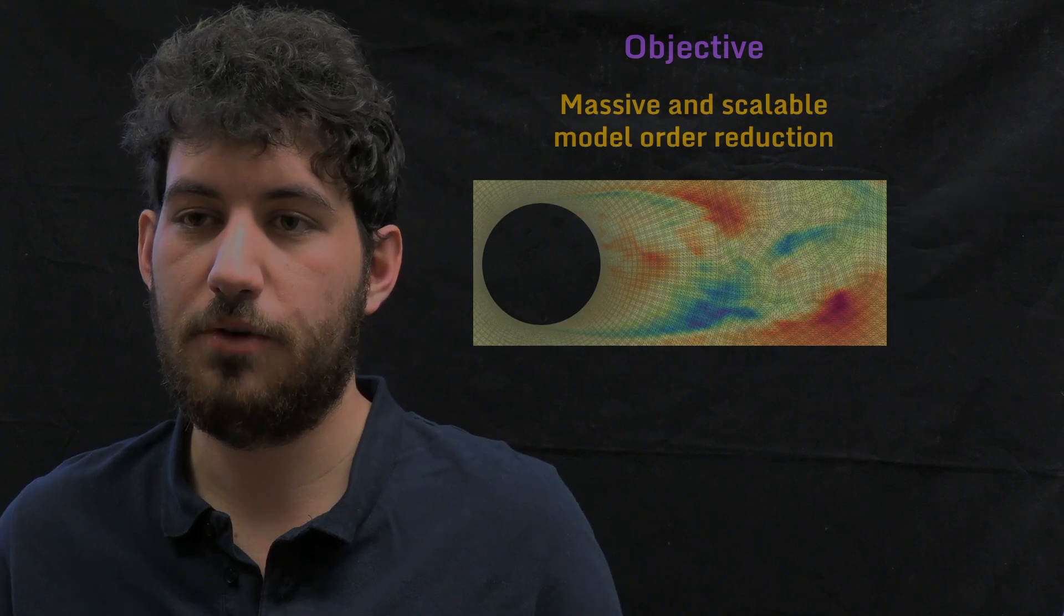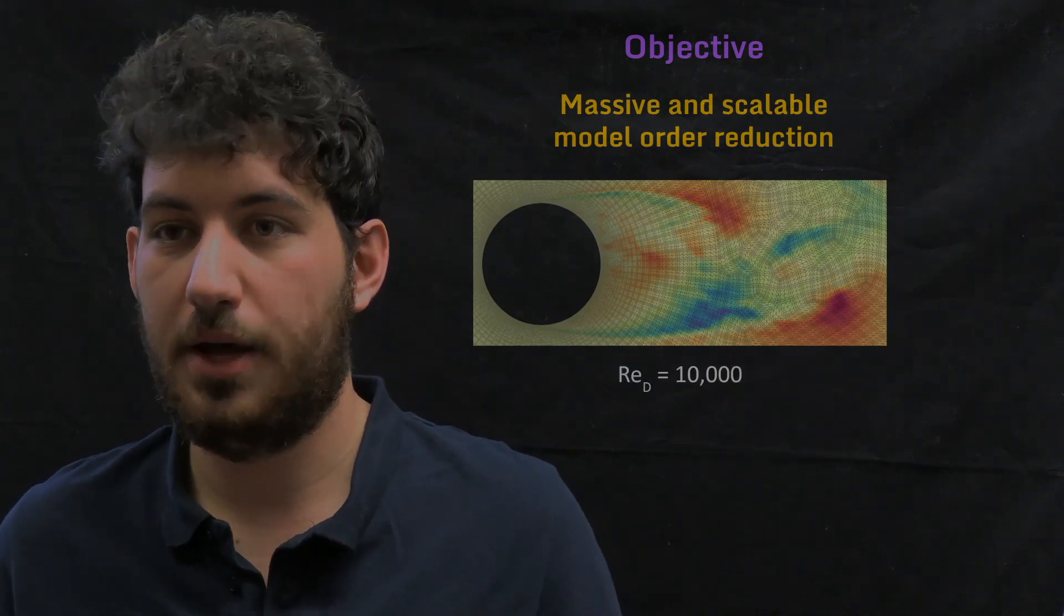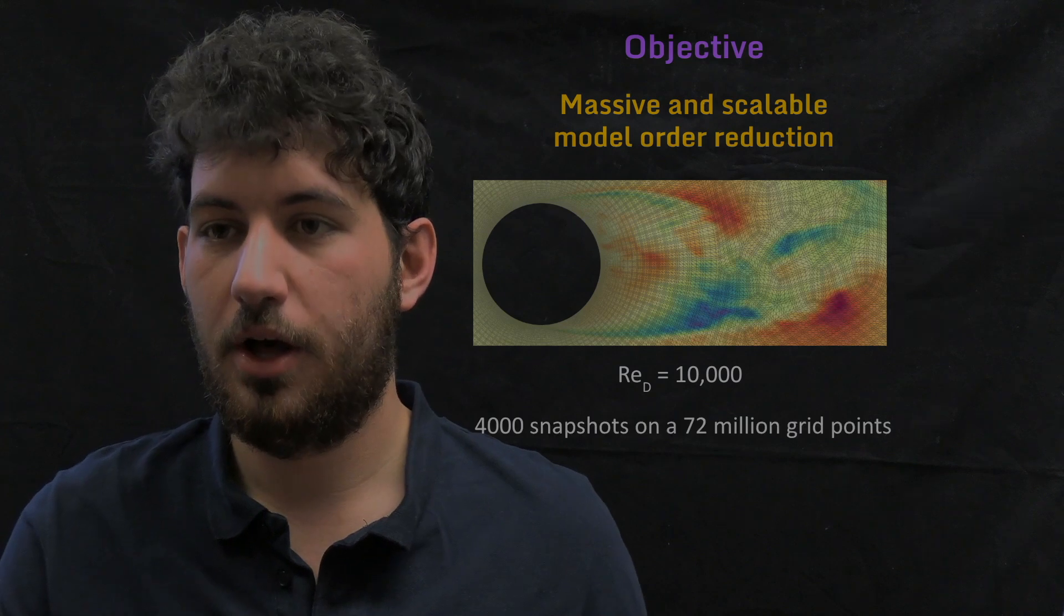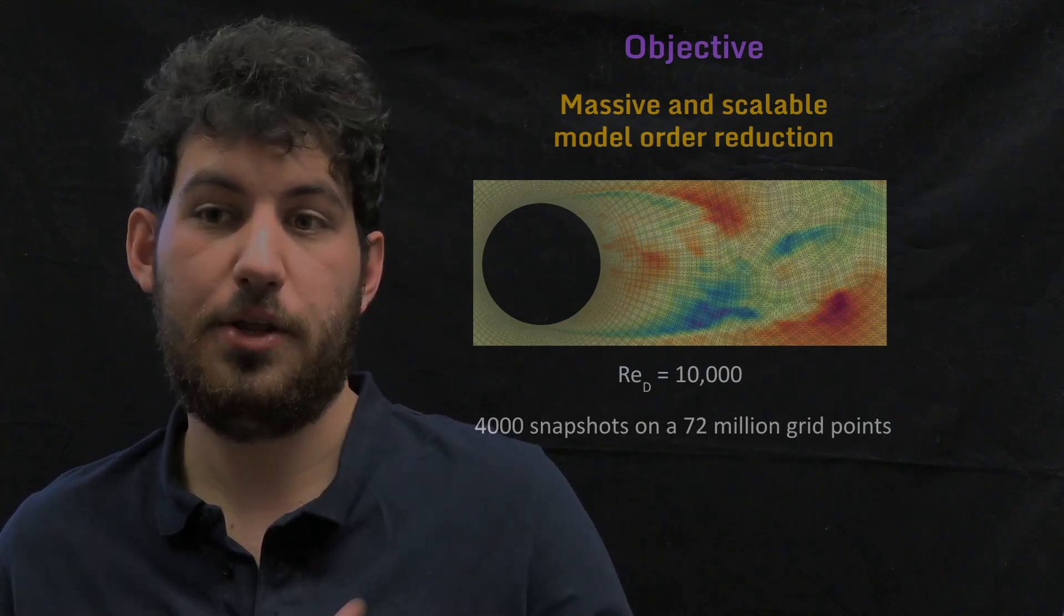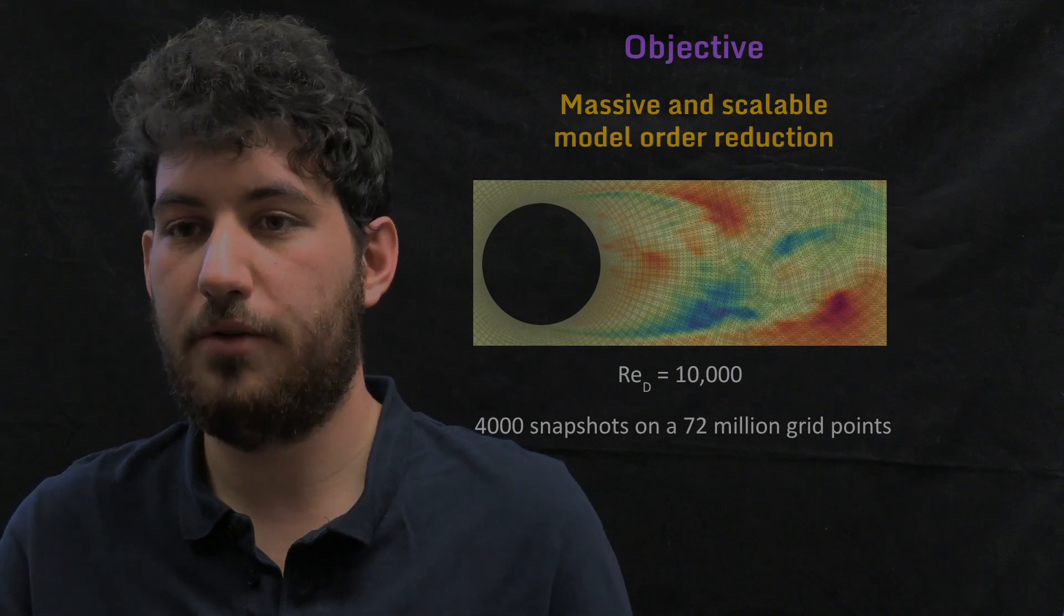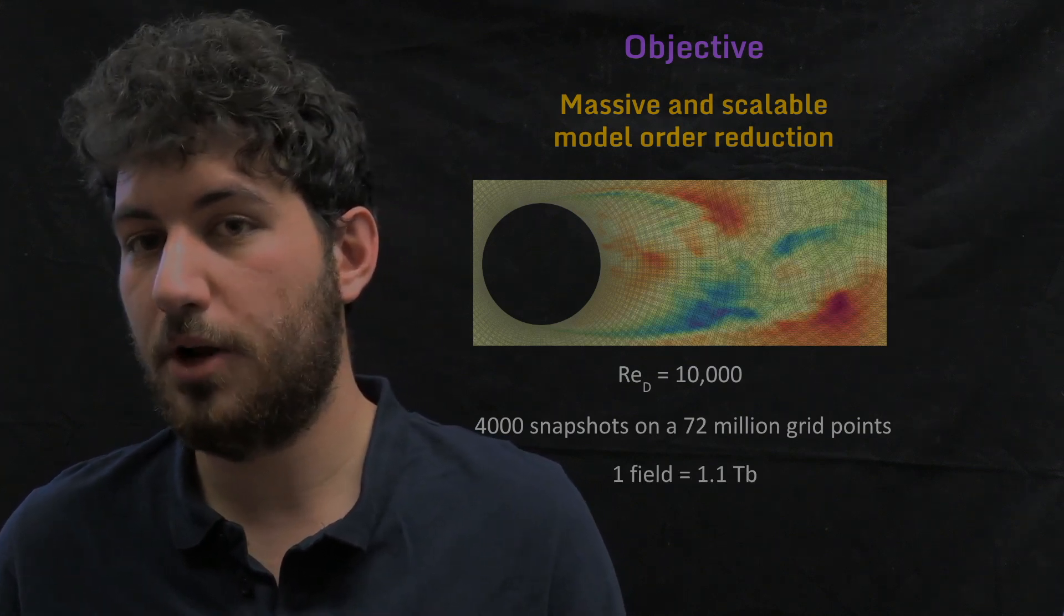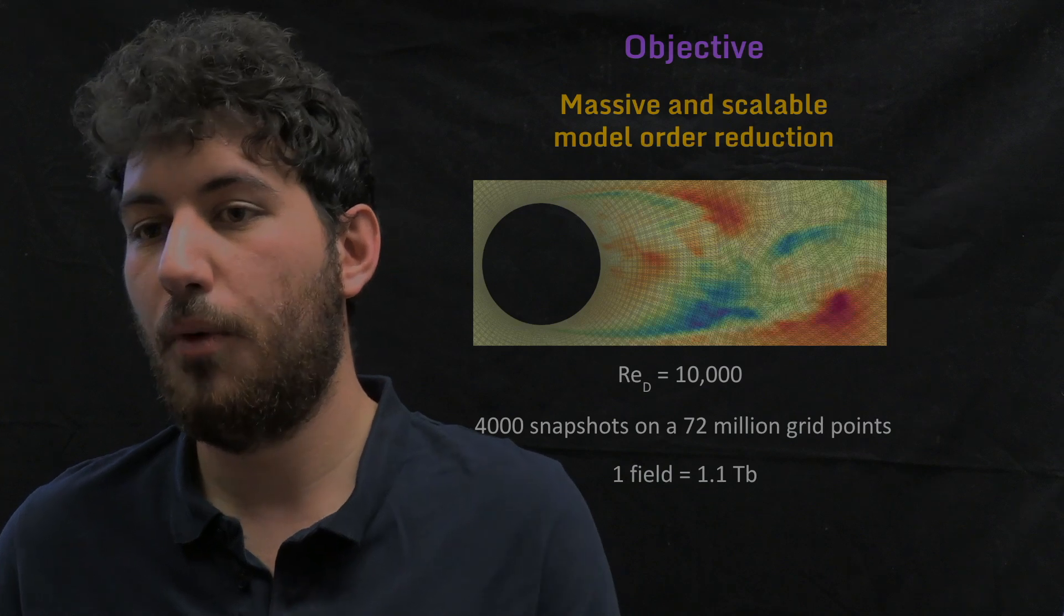This flow over a cylinder has been computed at a Reynolds number of 10,000 on an unstructured grid of 72 million grid points in a three-dimensional case. We collected 4,000 snapshots of that flow in this grid, so each field, for instance the streamwise velocity, weighs up to 1.1 TB.